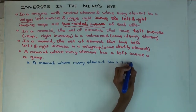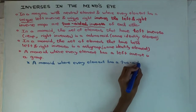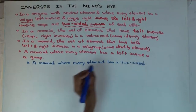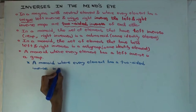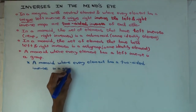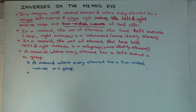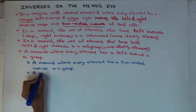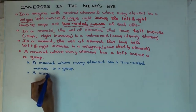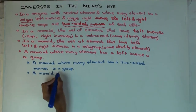We know that in a monoid, if an element has a left inverse and a right inverse, they're the same — they're equal by associativity. So if every element has a left inverse and every element has a right inverse, they are equal. That's why it works only if you're in a monoid, not an arbitrary magma. So the left and right inverses are equal, giving a two-sided inverse, and we get a group.